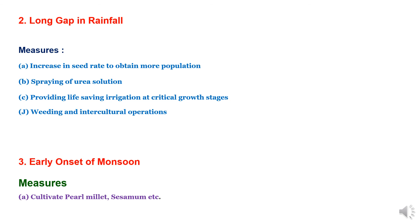The third parameter is early onset of monsoon. In such cases, we have to grow early maturing crops that have drought resistance and tolerance capacity, like groundnut and sesamum, where the crop duration is short so the crop can escape dry spells.